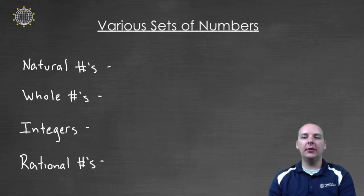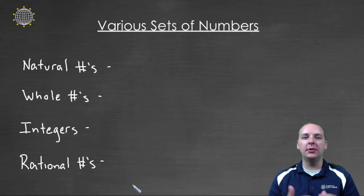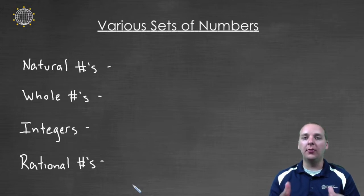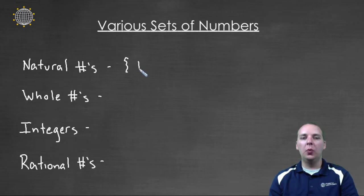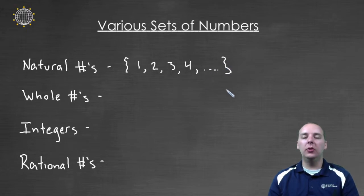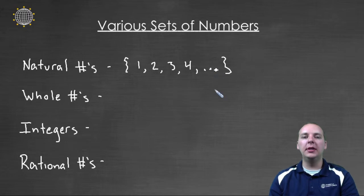The first set is the set of natural numbers. The natural numbers you can think of as the counting numbers that you learn as a child — they start at one and go two, three, four, five, etc., and they never stop. Using set notation, we write a curly brace starting with one, two, three, four, and once the pattern is clear we use dot dot dot and close it with a curly brace, indicating the set continues on forever.